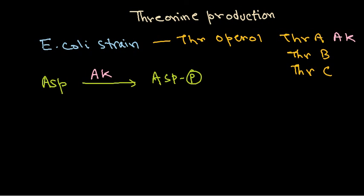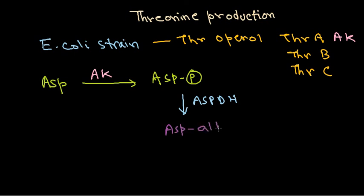Once you get aspartyl phosphate, it undergoes dehydrogenase activity via aspartyl semialdehyde dehydrogenase, which converts the aspartyl phosphate into aspartyl semialdehyde. Once aspartyl semialdehyde is produced, another mode of dehydrogenase activity takes place.